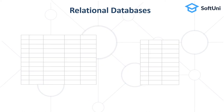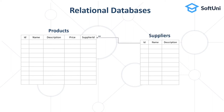Relational databases organize data in tables and data rows. For example, an e-commerce software could have a table holding products, where each table row could hold a product ID, product name, description and price. Some tables in the RDBMS system maintain relationships between them — for example, one supplier could have many related products and each product has a supplier.